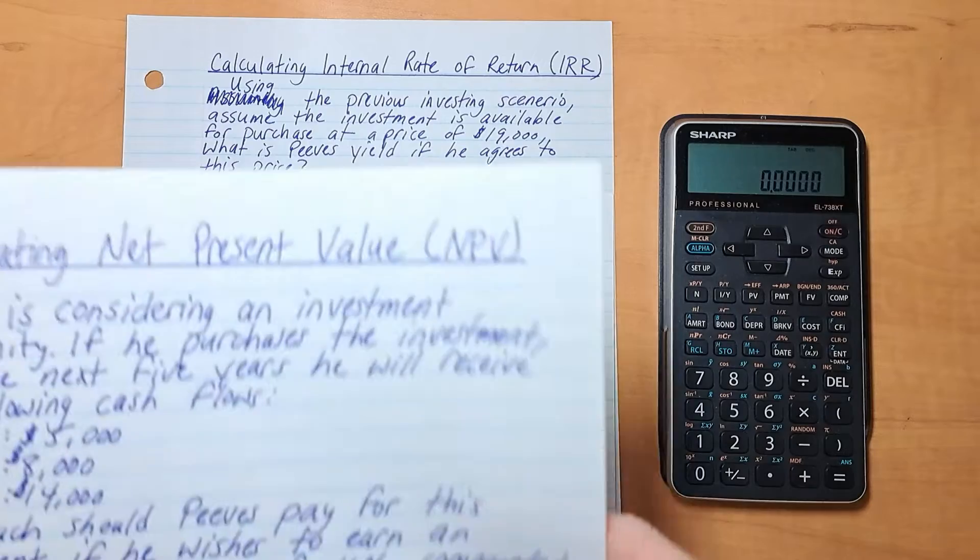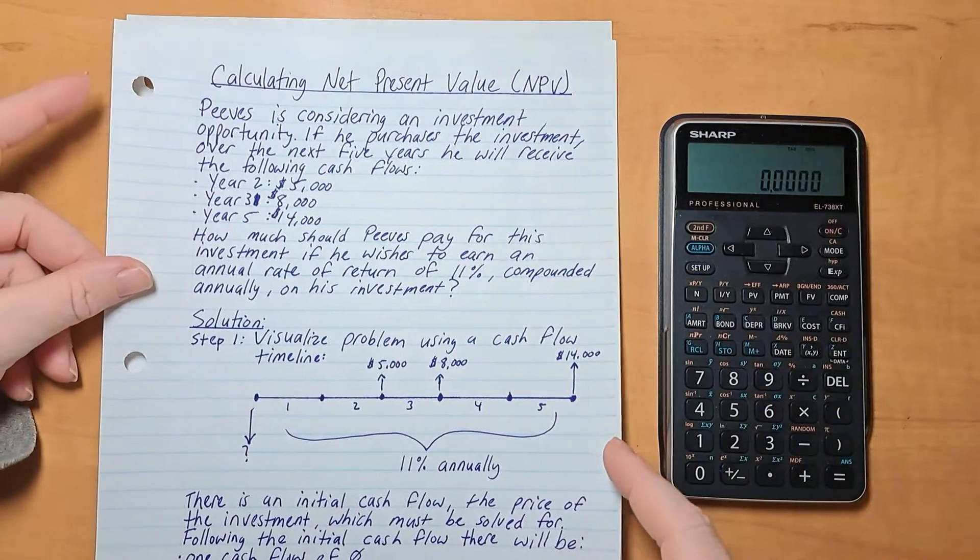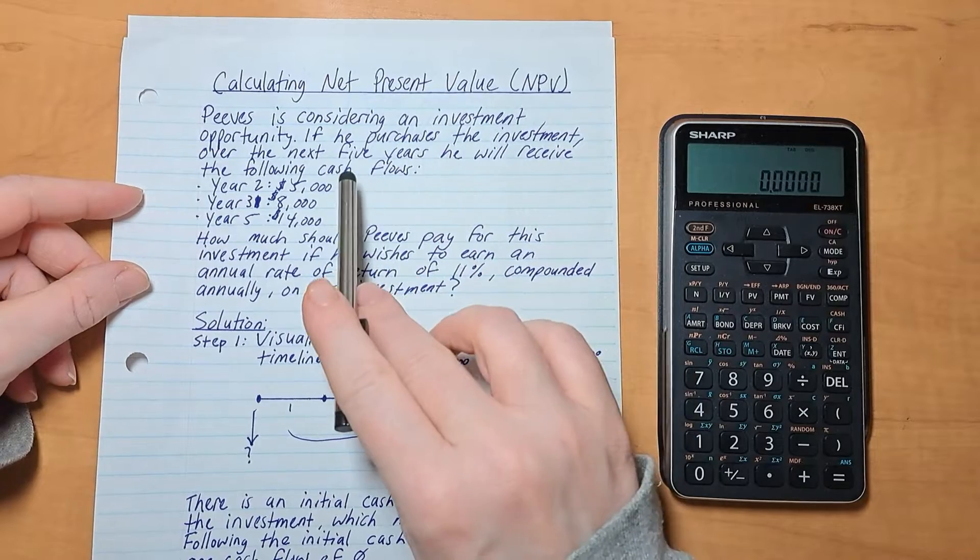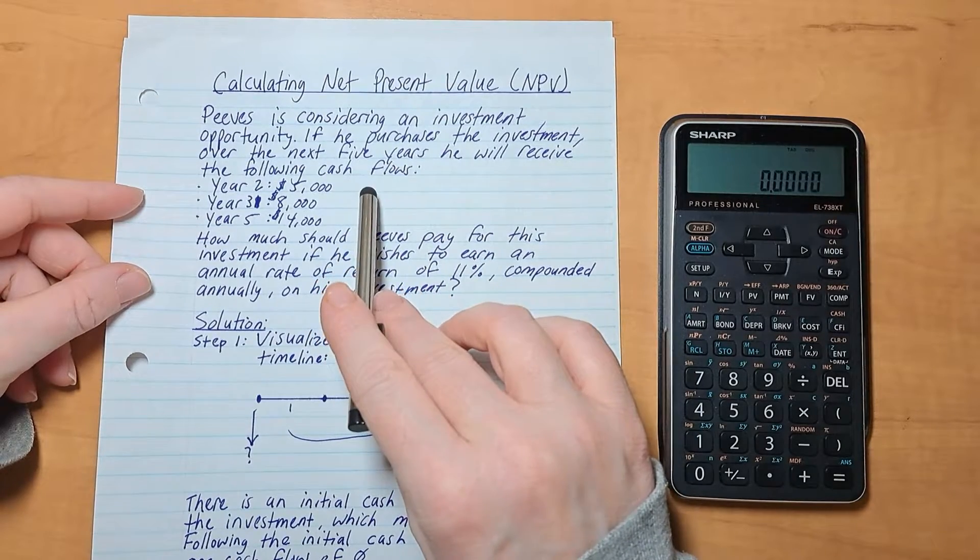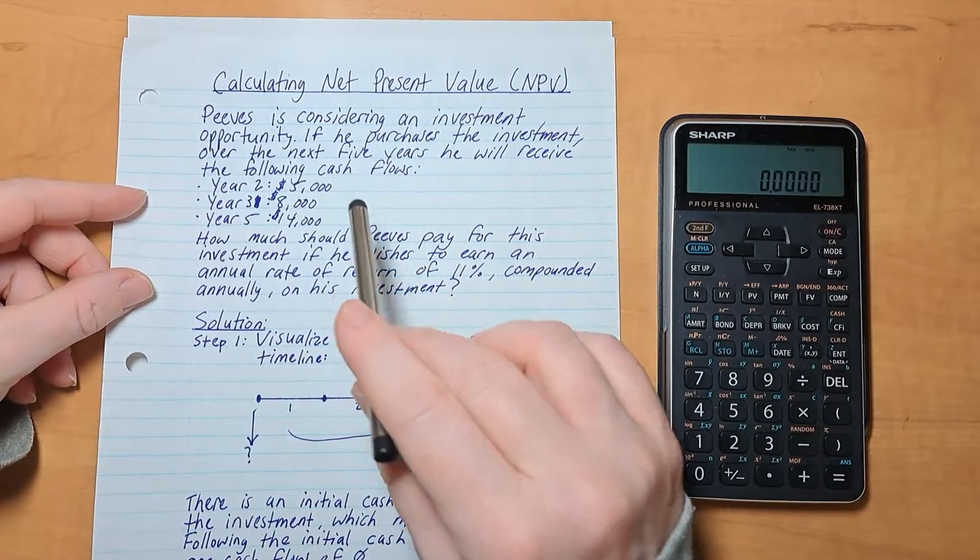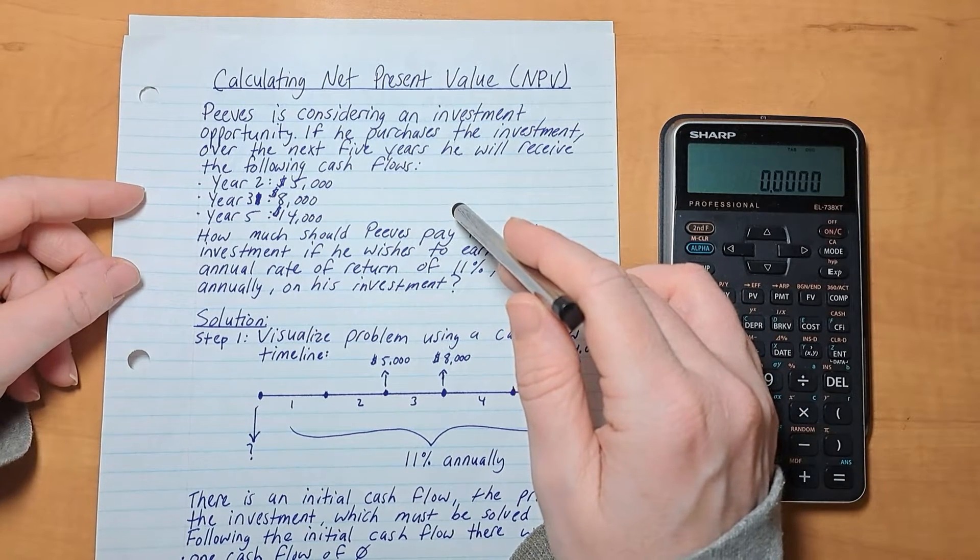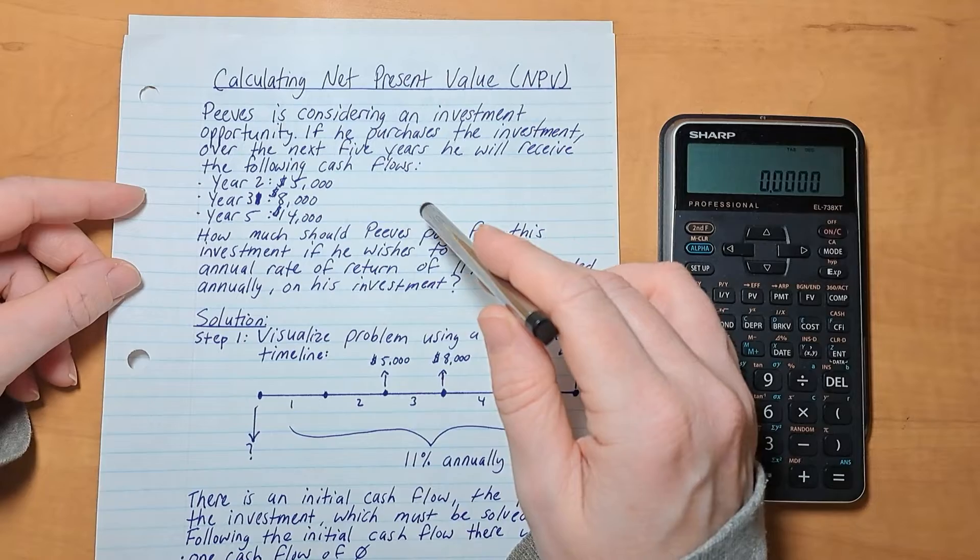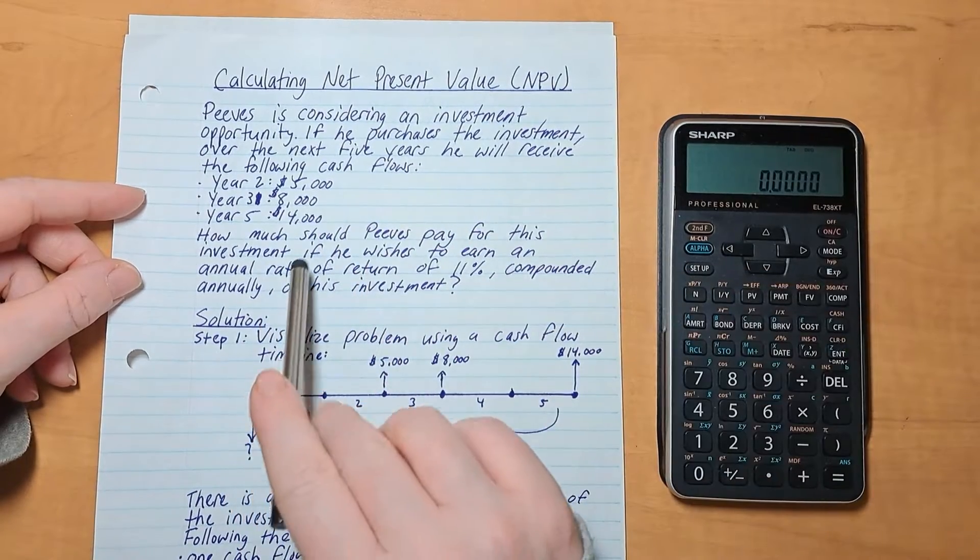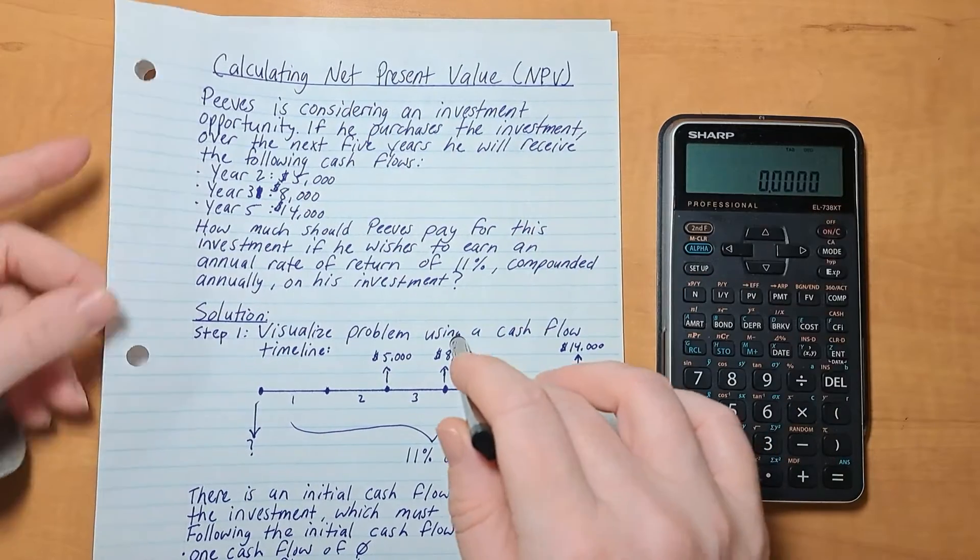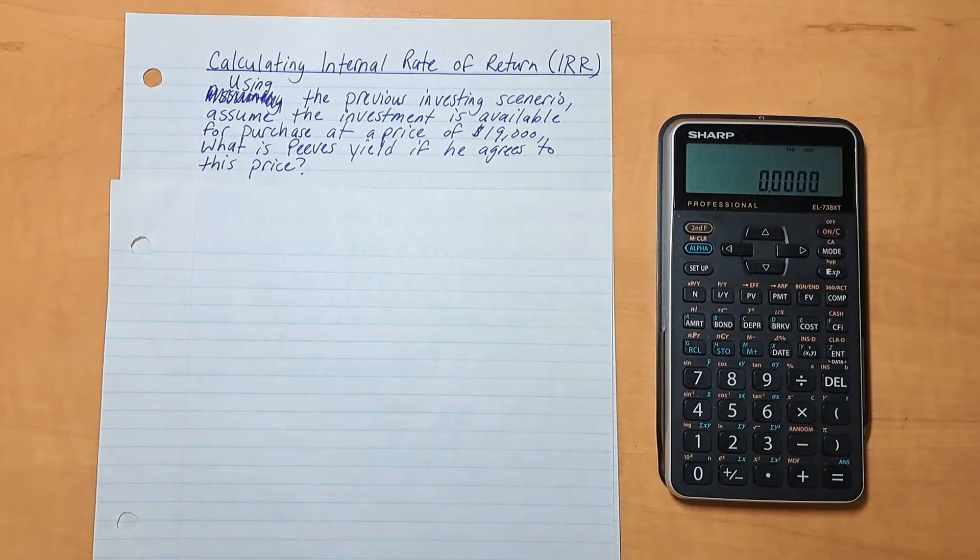So here's the previous scenario that we just did to calculate the net present value. Peeves is considering an investment opportunity. If he purchased the investment over the next five years, he will receive the following cash flows: Year 2 of $5,000, year 3 $8,000, and year 5 $14,000. How much should Peeves pay for this? That's what we did. We calculated the net present value, and now we're going to calculate the internal rate of return.